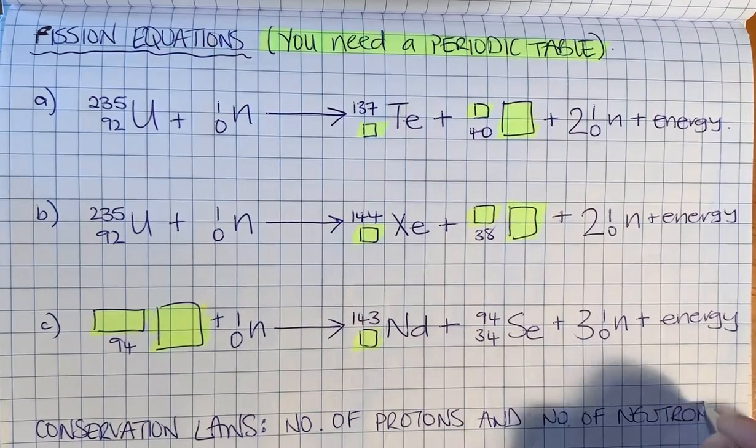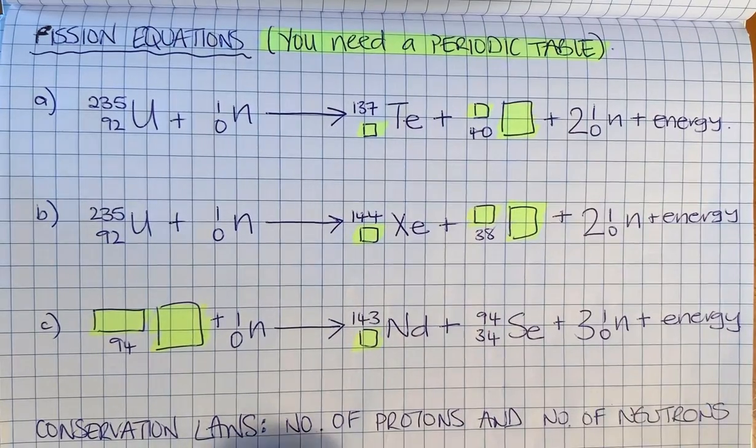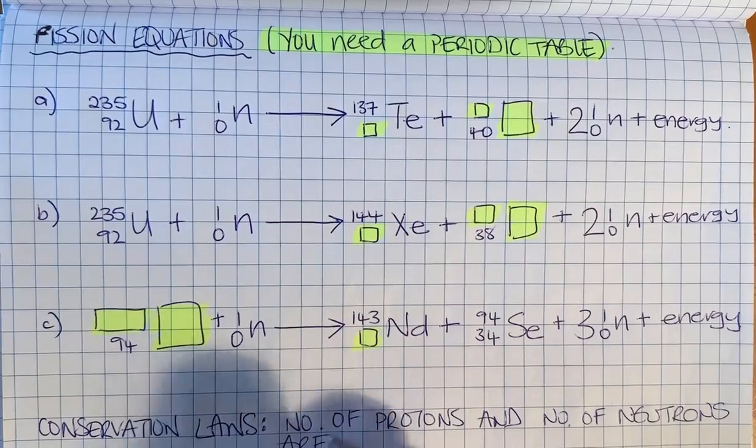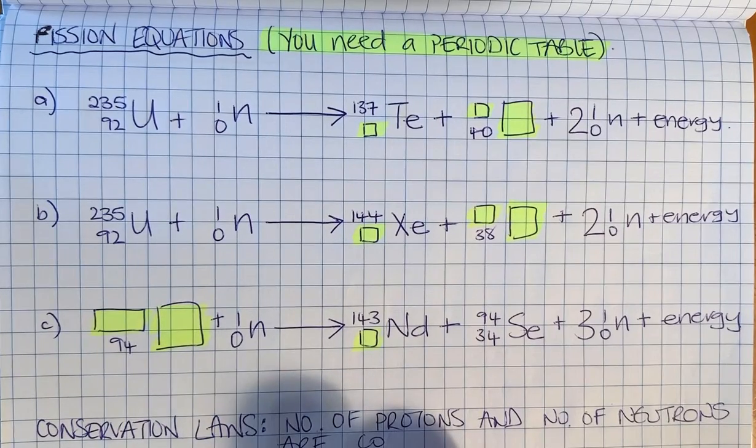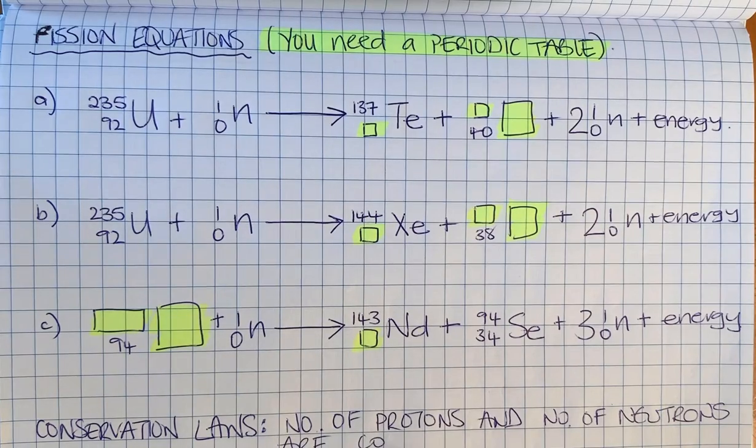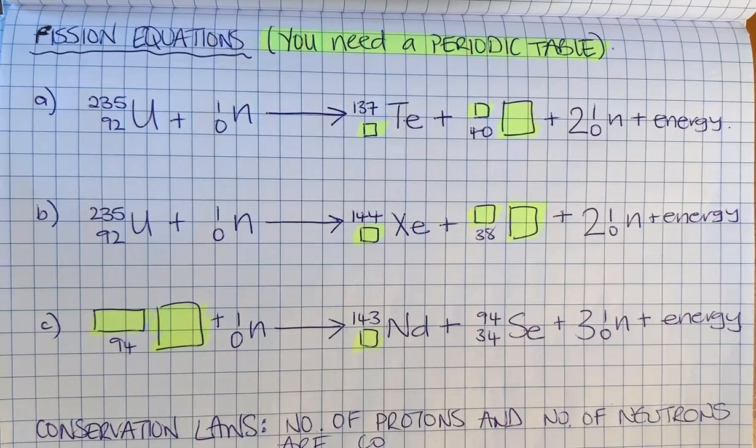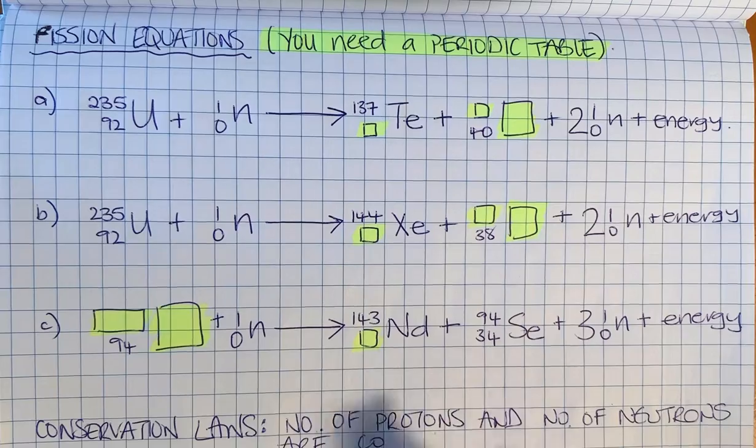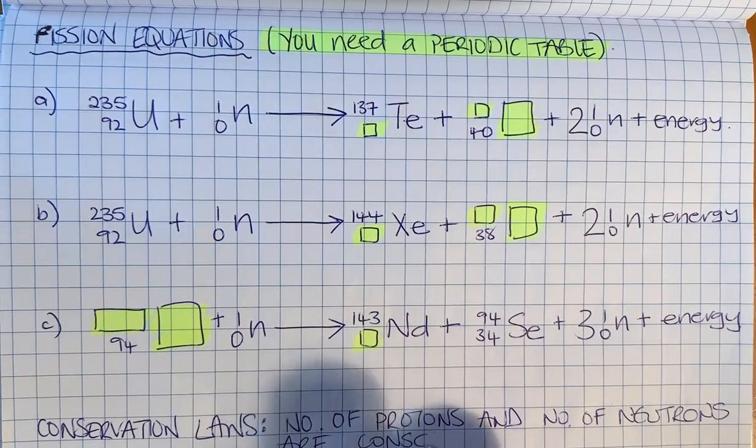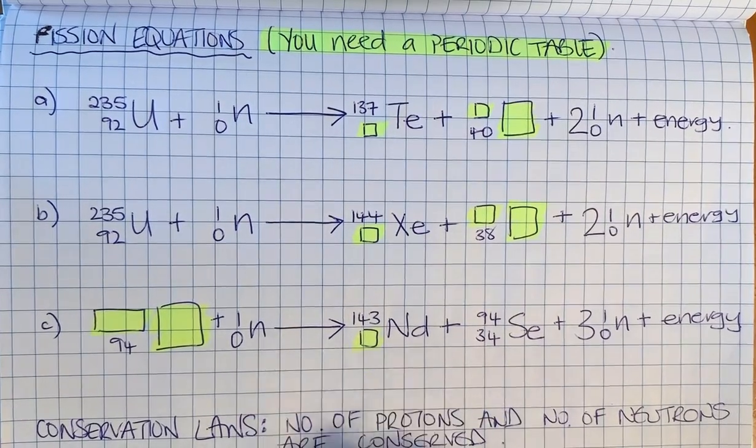We don't lose or gain any protons or neutrons. Matter doesn't just disappear or get created from nothing. The number of protons and neutrons must be conserved - that's quite important.